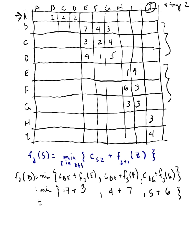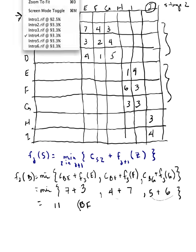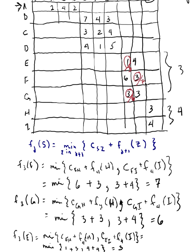From E is 3, F is 7, G is 6, so this is 10, 11, and 11, so it's 11. And I have two possibilities here. I can have B goes to F, and then F goes along its optimal path, which was F goes to I, and then I to J.